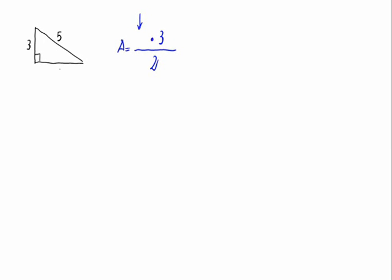So let's calculate the base length to calculate the area. Let's call it x and as we have a right triangle because of this 90 degrees angle.